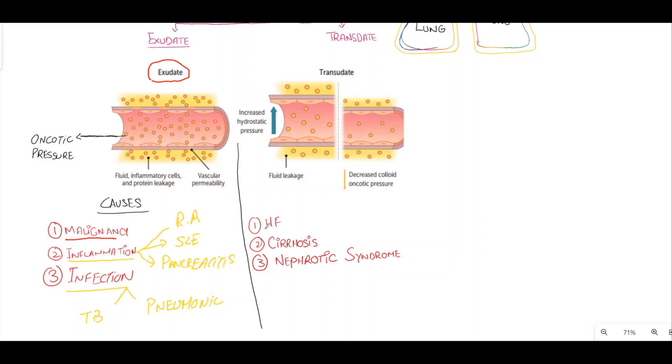Now I'm going to discuss the causes of transudate pleural effusion. The first is heart failure, which leads to increased hydrostatic pressure. Next is cirrhosis and nephrotic syndrome. Cirrhosis leads to decreased synthesis of albumin protein and will lead to decreased oncotic pressure. Nephrotic syndrome leads to increased loss of albumin, which will also lead to decreased oncotic pressure.